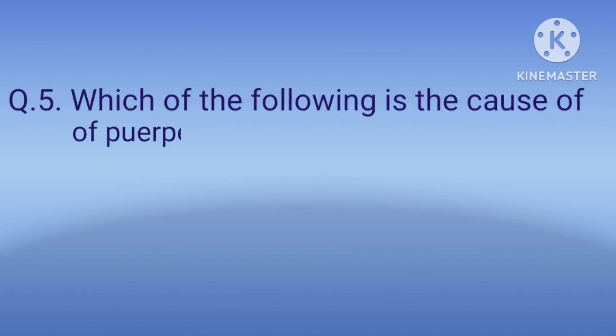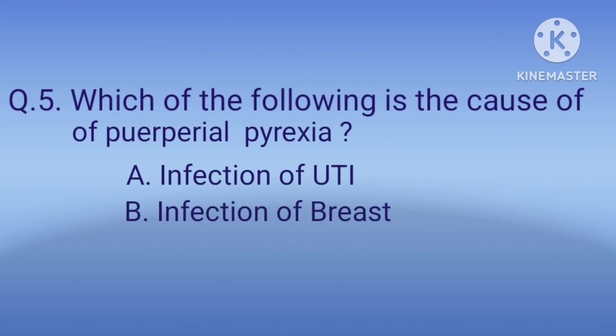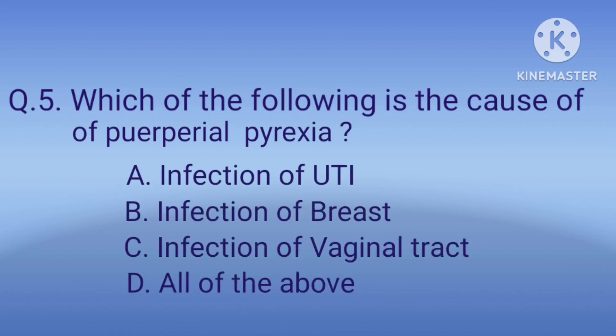Question 5: Which of the following is the cause of puerperal pyrexia? Option A: infection of UTI, option B: infection of the breast, option C: infection of the genital tract, option D: all of the above. The correct option is D, all of the above.